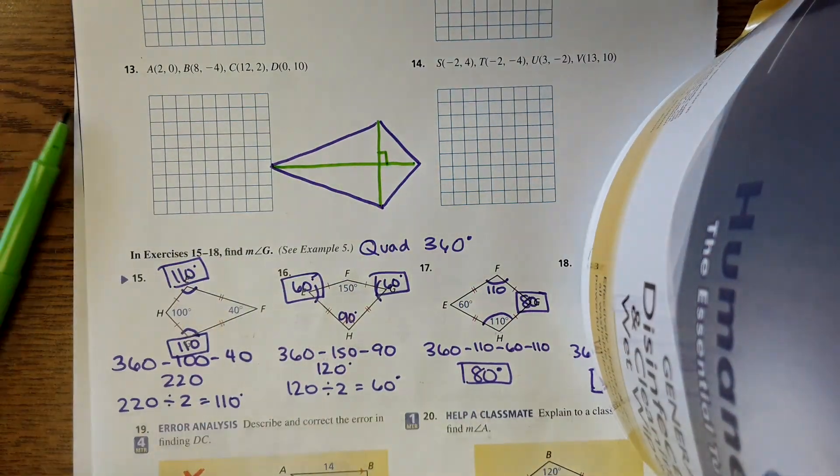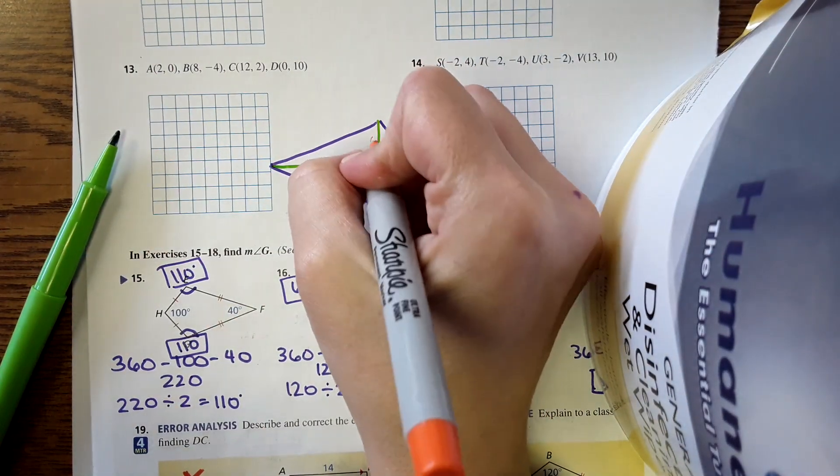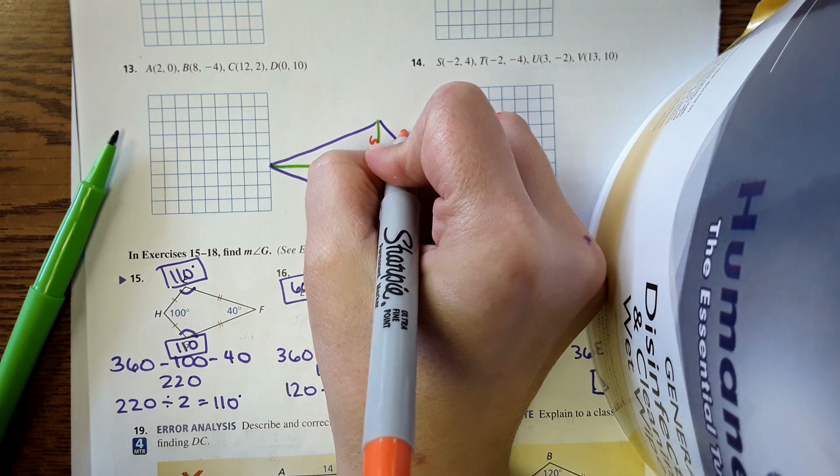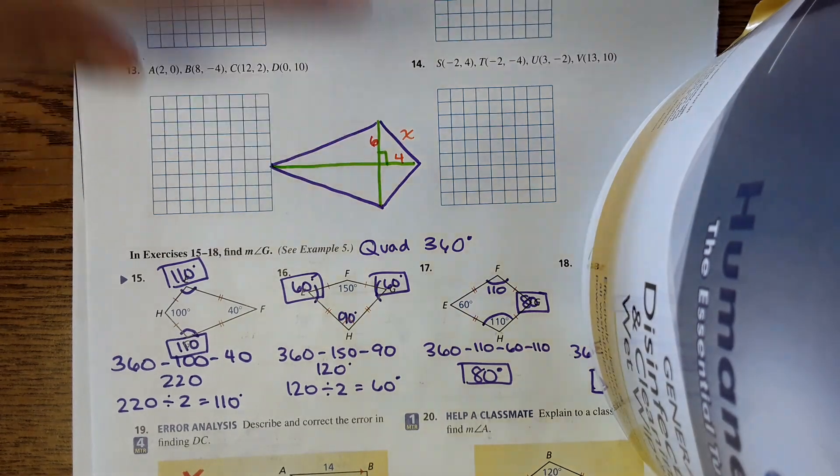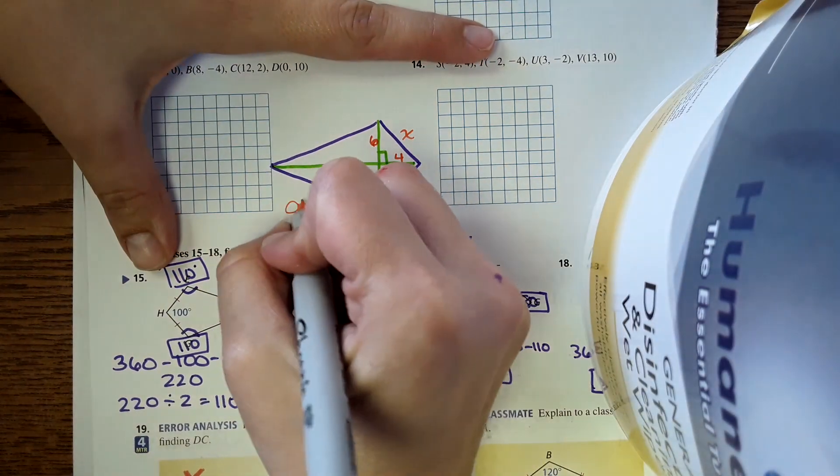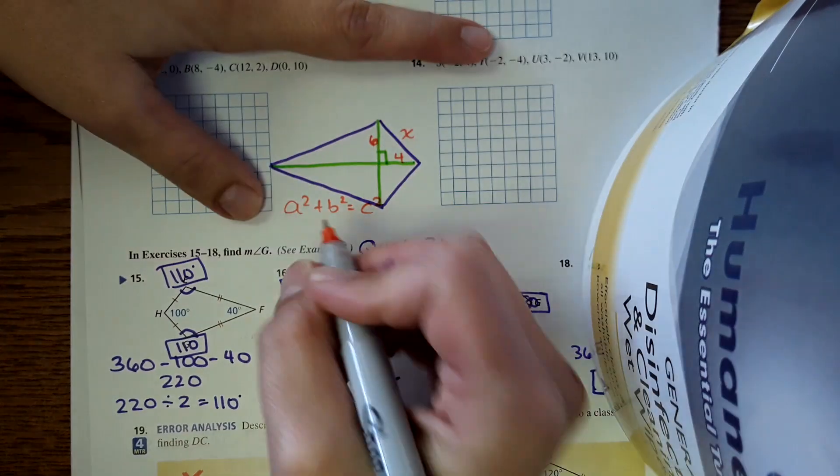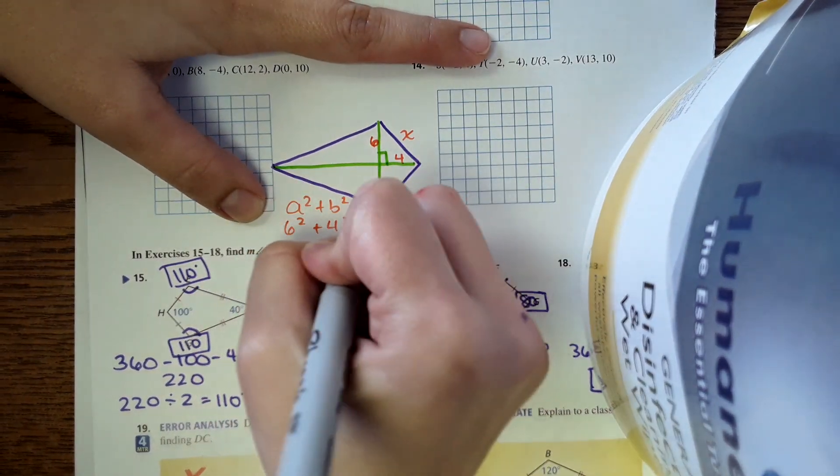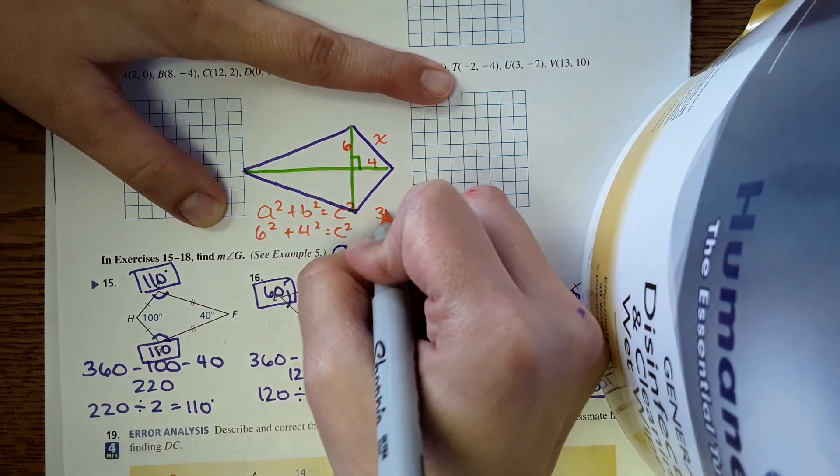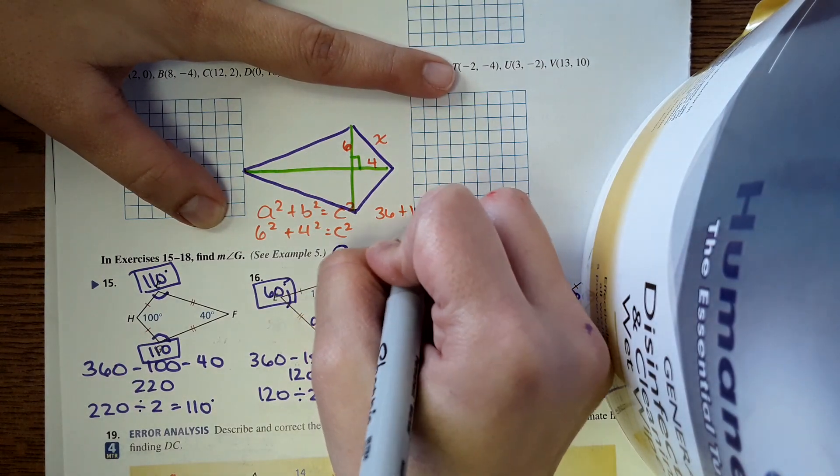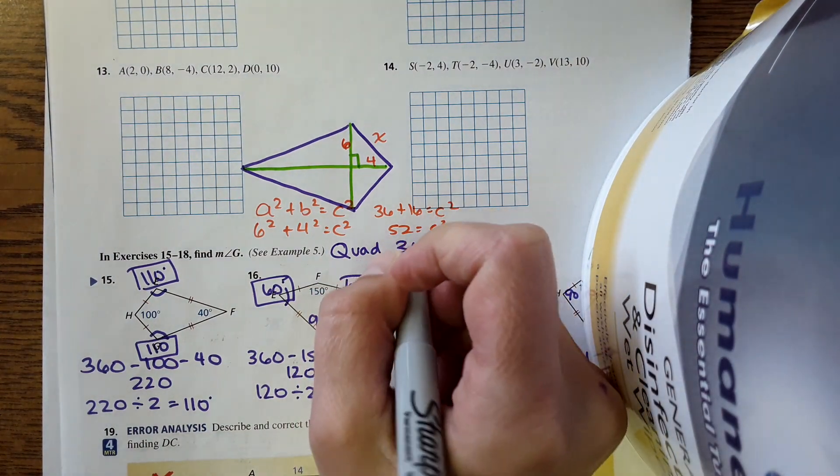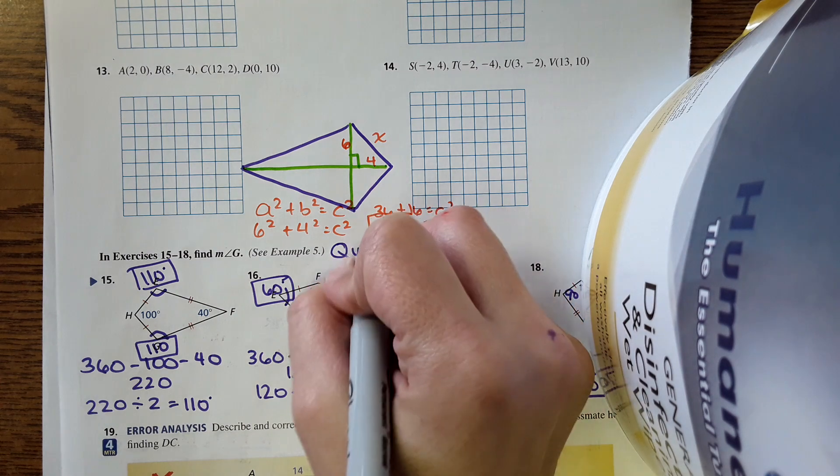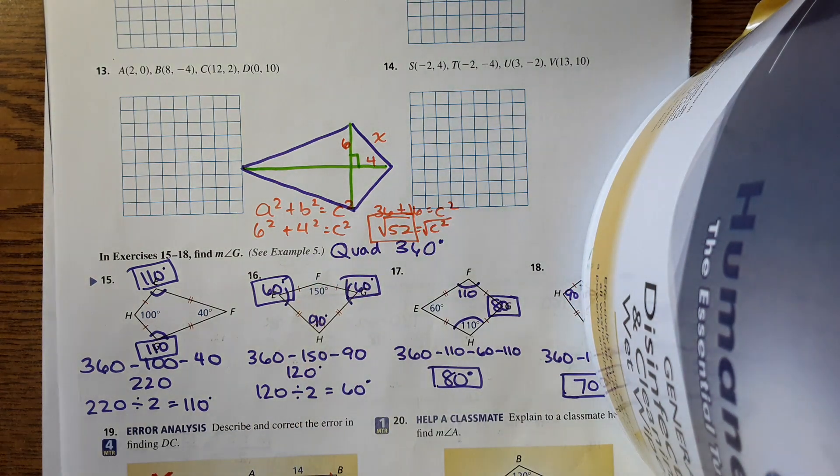Okay, so let's say on this kite we're told that this is six units and then this is four, and it wants to know this distance here. The way we'd find that distance is by using Pythagorean theorem since we have a right triangle. So to do that, a squared plus b squared equals c squared is the equation we'd use. Just 6 squared plus 4 squared equals c squared. Get 36 plus 16. Square root of both sides, and then the answer you'd be looking for in the answer bank would be square root of 52.